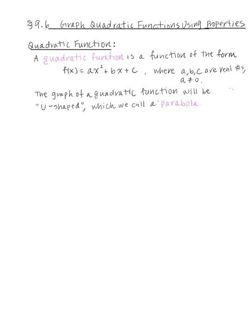Hi everyone, this is Dr. Nock, and today we're going to be learning about graphing quadratic functions using properties. A quadratic function is a function of the form f(x) = ax² + bx + c, where a, b, c are real numbers and a cannot be 0. Since a cannot be 0, you're given a second degree polynomial, but now we're going to view this as a function.